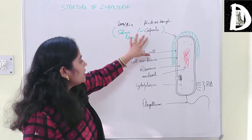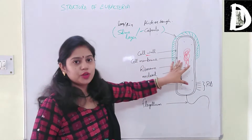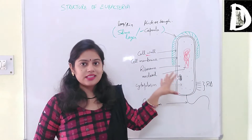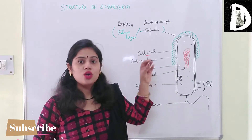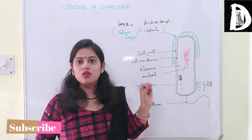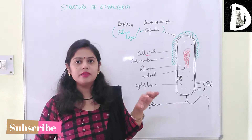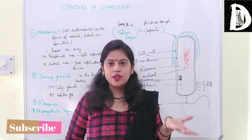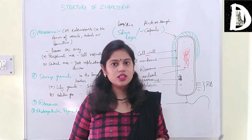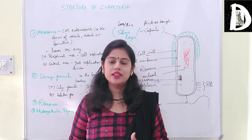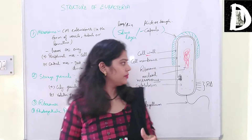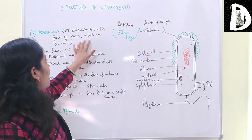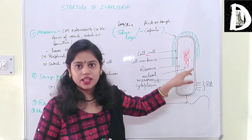After these three layers, we come to the cytoplasm, which is a viscous or semi-solid matrix present in the bacterial cell. No membrane-bound cell organelles are present in it. Now, within the cytoplasm, the first structure is your mesosomes. These are cell membrane extensions - the cell membrane invaginates into the cytoplasm.